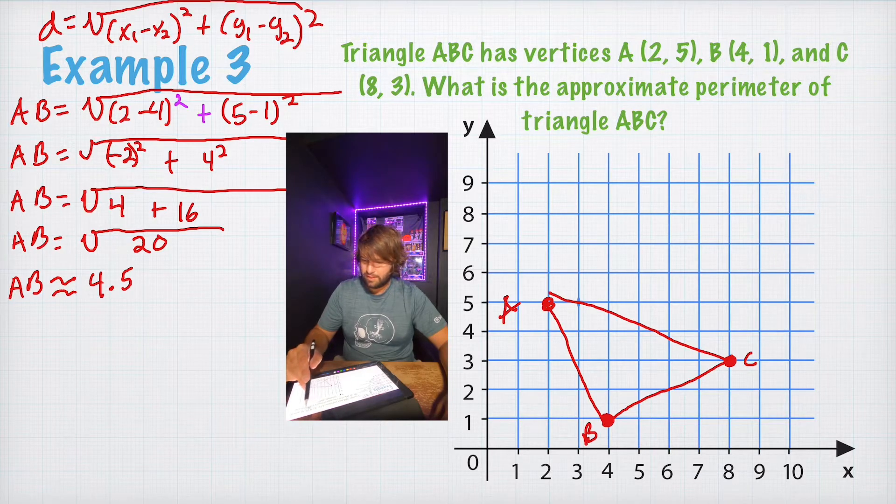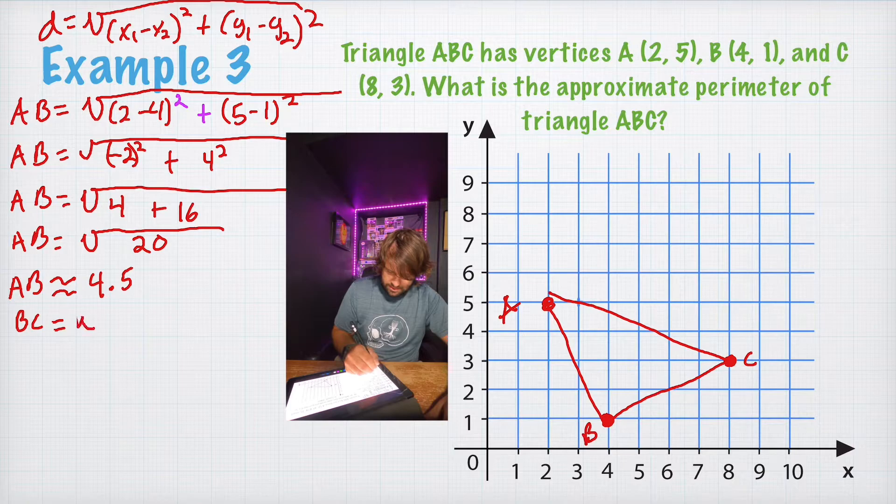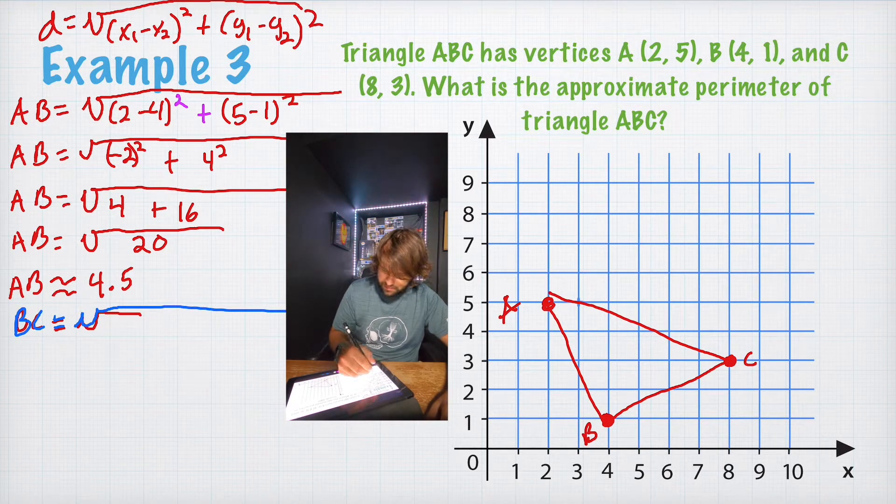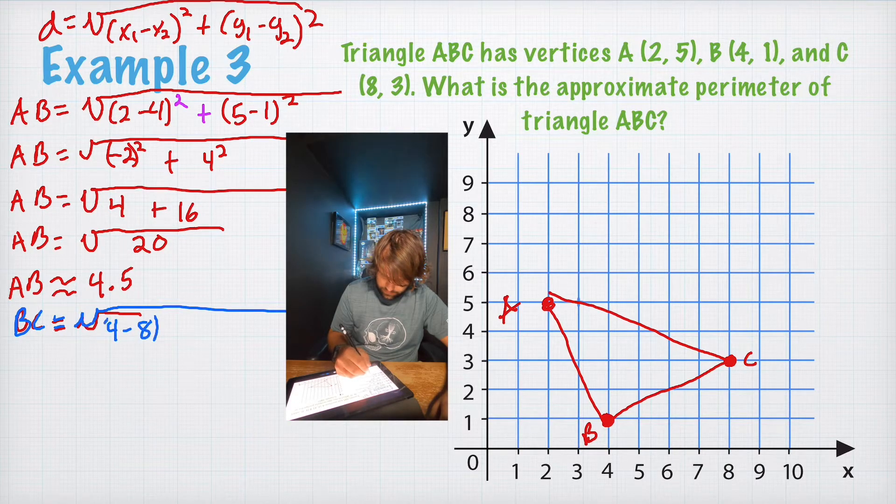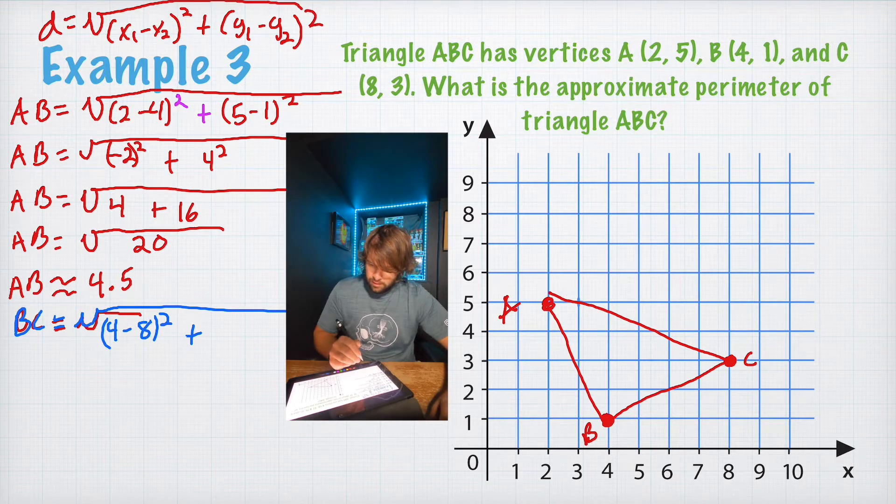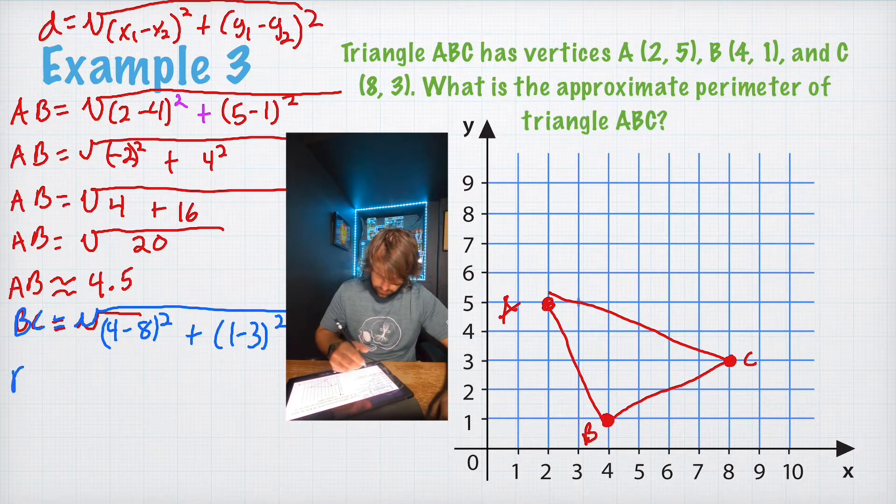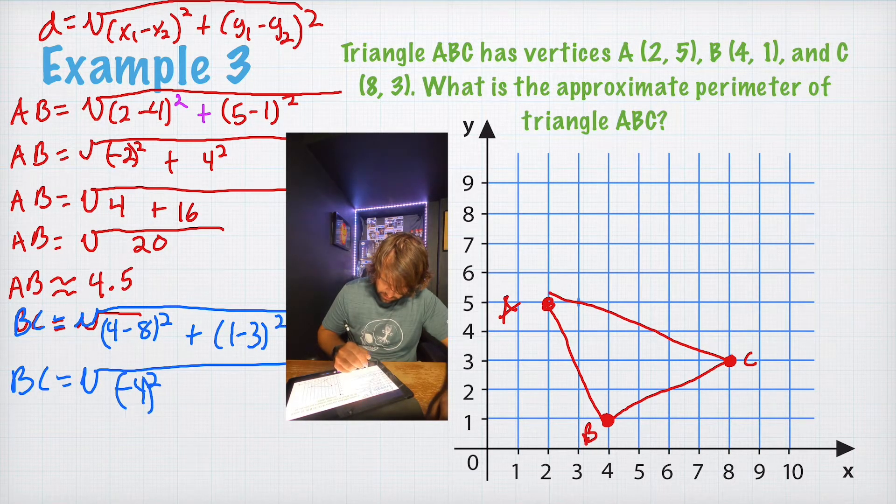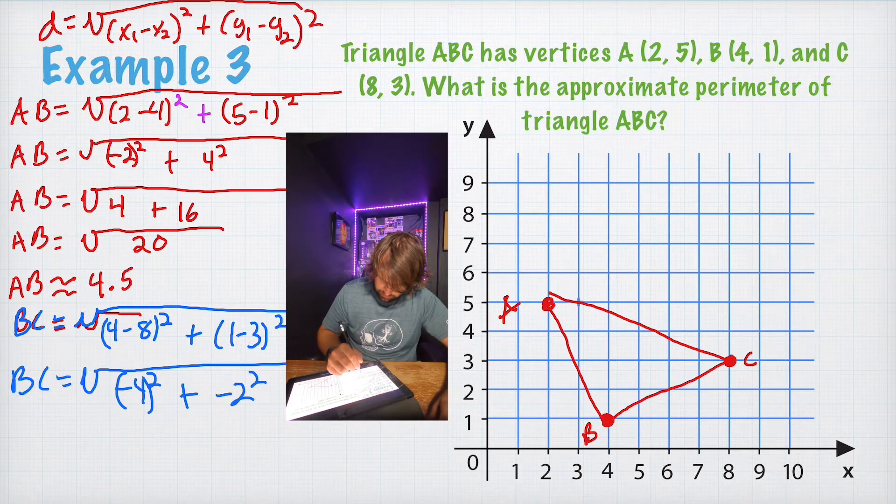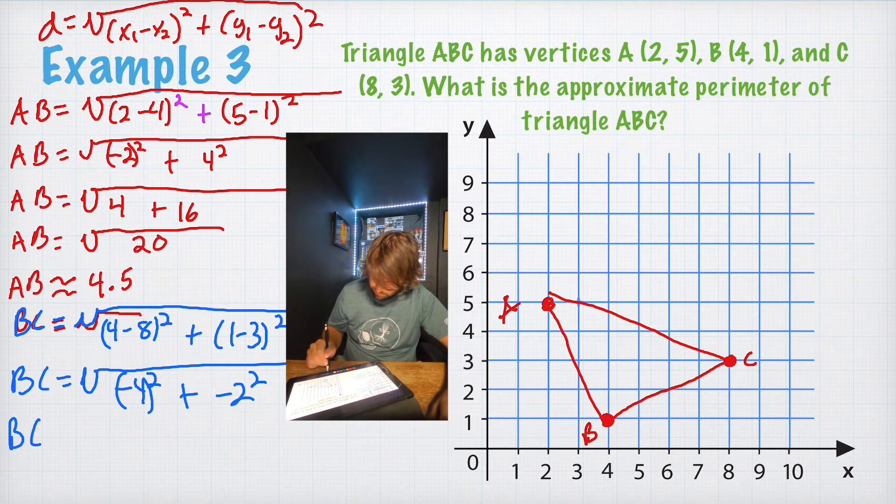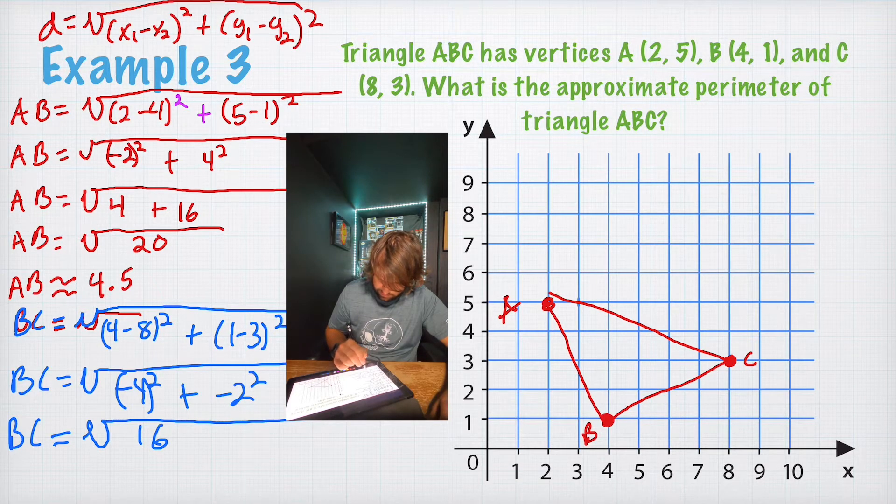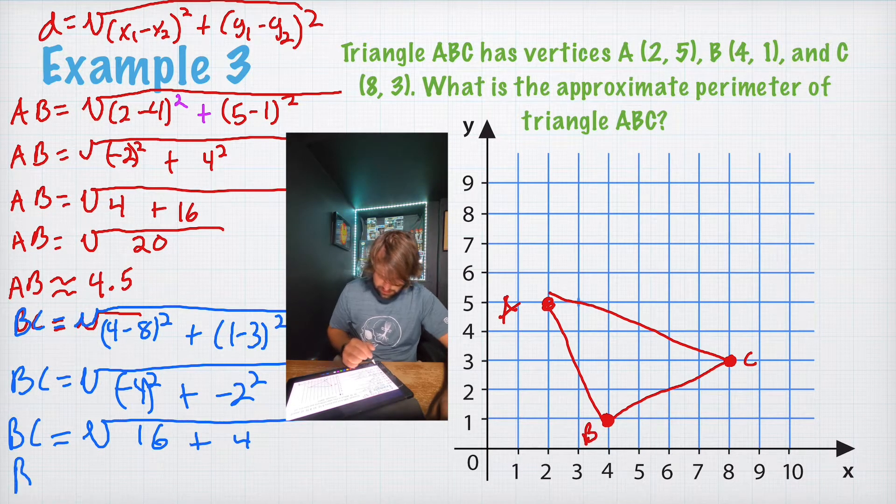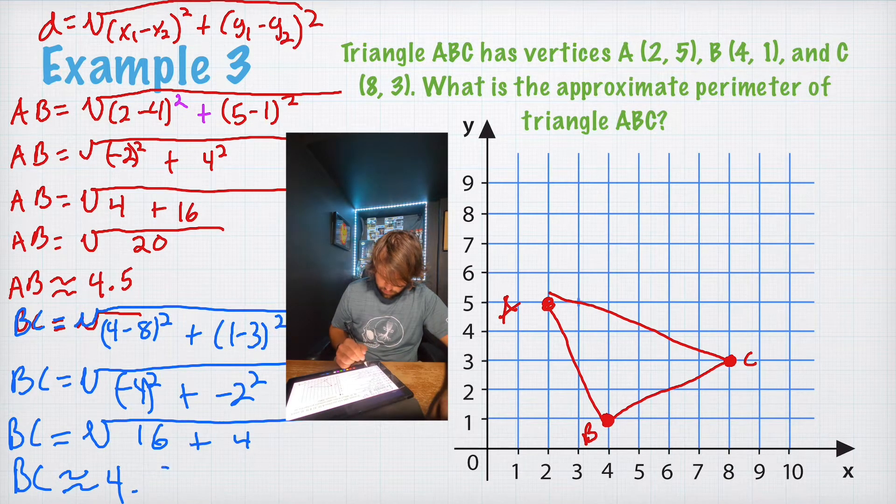Now we're just going to go on and jump to finding the side length BC. So, BC equals the square root of 4 minus 8 squared plus 1 minus 3 squared. So, BC equals the square root of negative 4 squared plus negative 2 squared. So, BC equals the square root of 16 plus 4. And if you notice, we're at the same point here. So, we know that BC roughly equals 4.5.